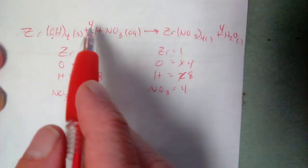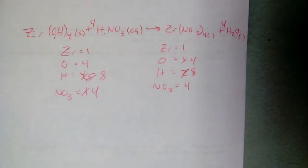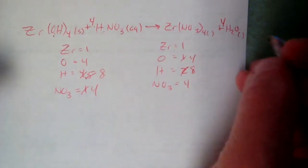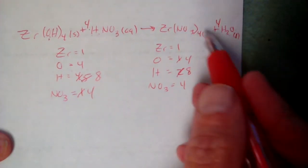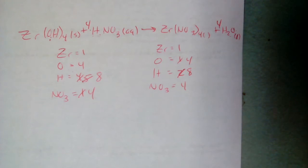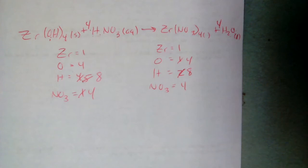Now we have a balanced equation. Next, figure out the states. Water is easy — it's a liquid. Zirconium(IV) nitrate is trickier because the solubility table may not address it directly. We can search solubility rules online. Looking for nitrates — NO3⁻: salts containing nitrate ions are generally soluble, so zirconium(IV) nitrate is aqueous.